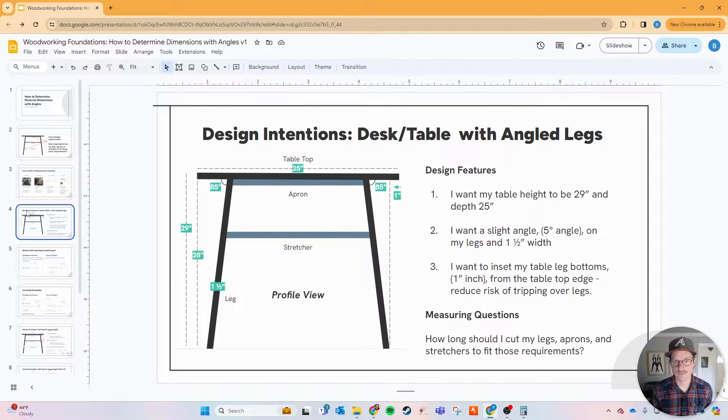Last week I released a white oak desk build. You can see the link in the description or above where I had some design features I wanted to incorporate and I wanted my build to fit exactly those dimensions as intended. Here are those: I had the desk I wanted to be 29 inches tall and a depth of 25 inches. I wanted a slight angle, about five degrees on those legs, and I wanted those legs to be one and one half inch width.